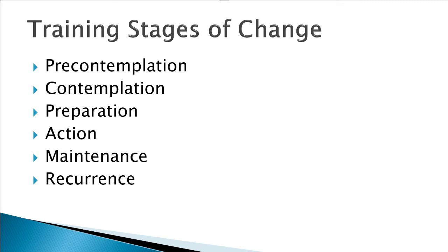Pre-contemplation, contemplation, preparation, action, maintenance, and possibly recurrence. Most of us have heard these phrases before. These are the five, or six I guess in this case, stages of change. Not everybody believes that recurrence has to be in the stages of change. They're really named very literally.